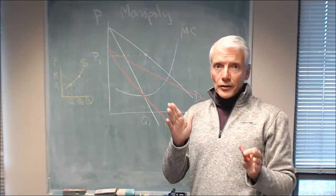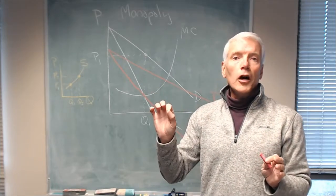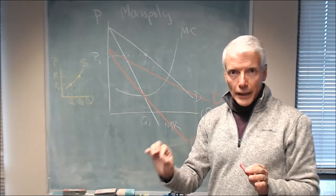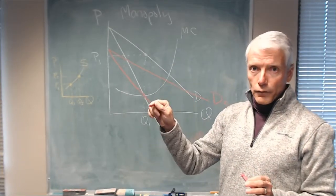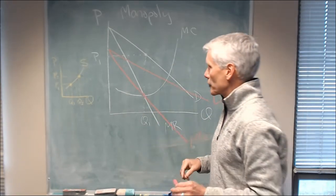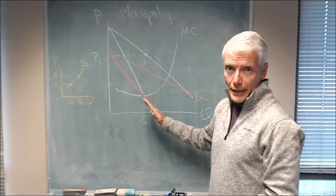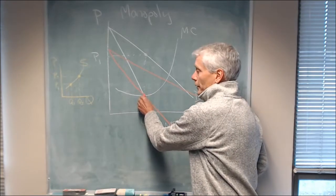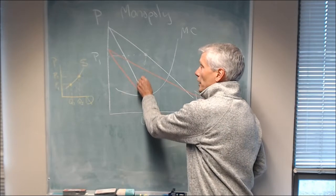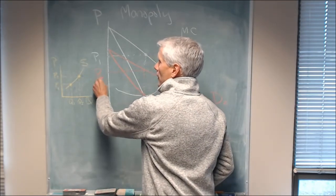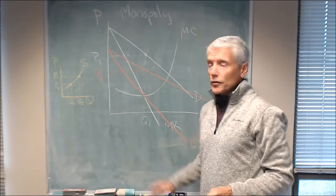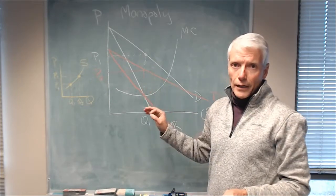We know that a monopoly always sees where marginal revenue equals marginal cost, goes down to the quantity axis to find the quantity, and then up to the demand curve and over to the price axis to see the price. With the new demand curve, marginal revenue equals marginal cost here. We go up to the demand curve and over, and P2 is the price that maximizes profit for this monopoly.